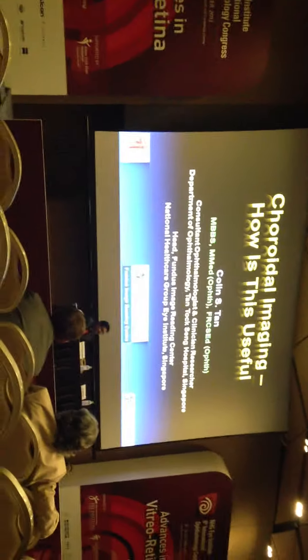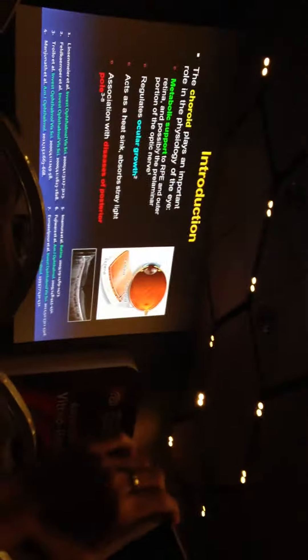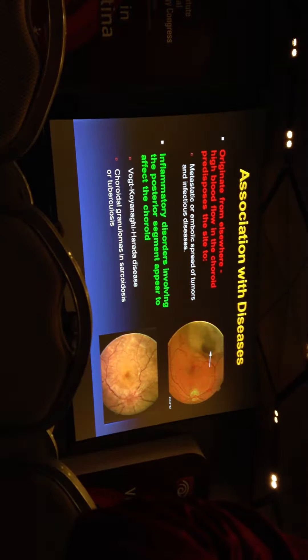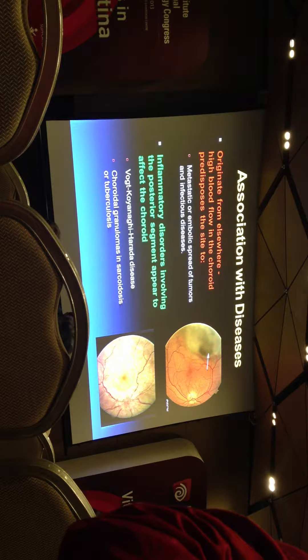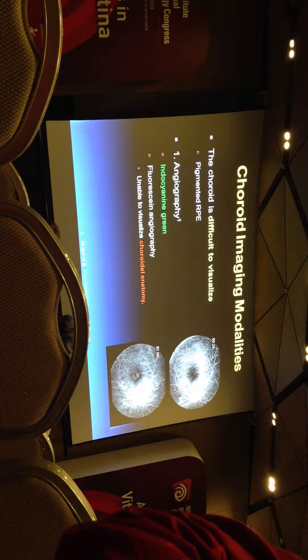When you can see the mirror image, this is an important illustration of how we use EDI imaging to visualize the choroid. Now we know that the choroid plays an important role in the pathophysiology of the eye — it provides metabolic support, it regulates growth, and it's also associated with various retinal diseases. Other systemic diseases can sometimes affect the choroid and manifest in various ways, so it's obviously important to visualize.